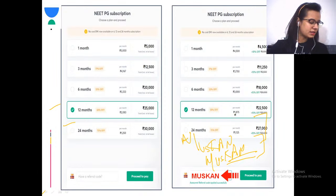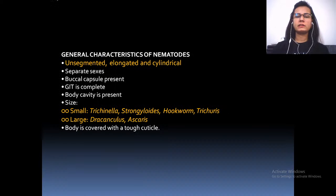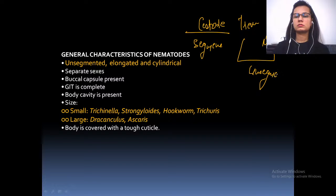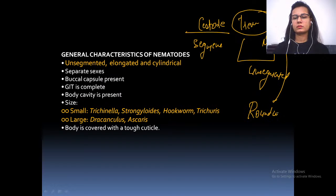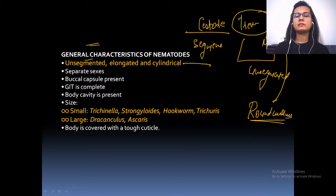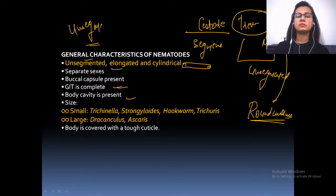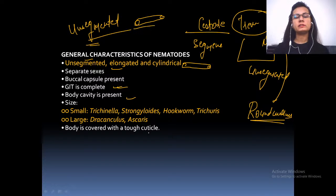Now starting with the general characteristics of nematodes. Yesterday we read about cestodes, trematodes, and nematodes. Cestodes are segmented while the other two are unsegmented. Trematodes are leaf-like and nematodes are roundworms. General characteristics: nematodes are unsegmented, elongated, and cylindrical with separate sexes, a complete gut and complete body cavity. The key point to remember is that they are unsegmented and cylindrical.